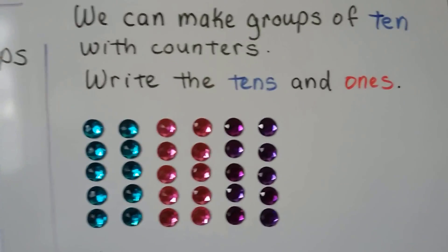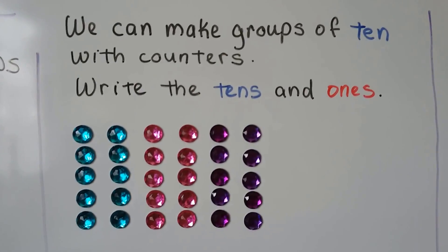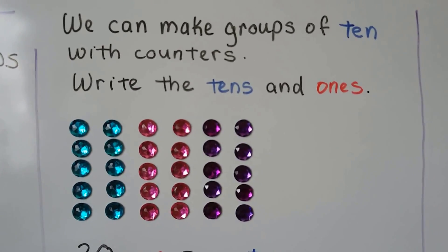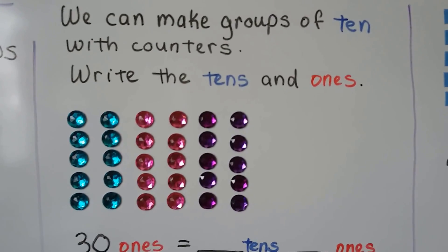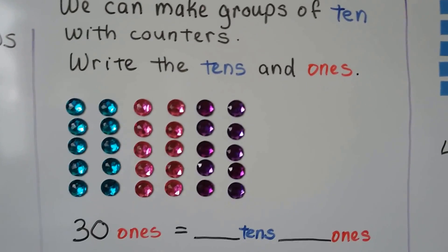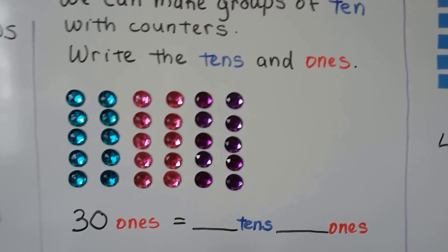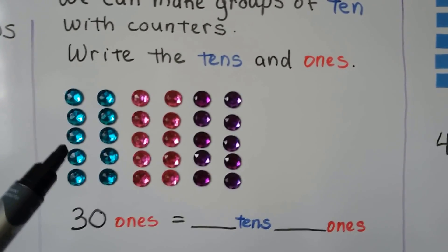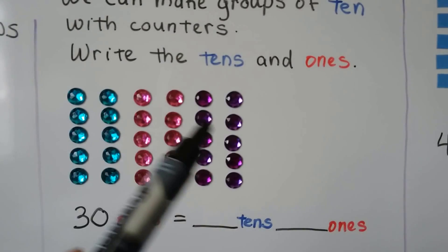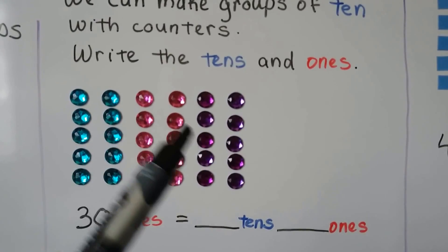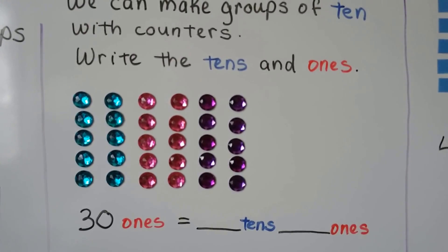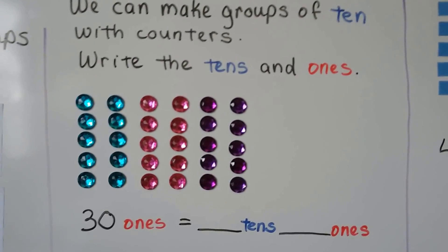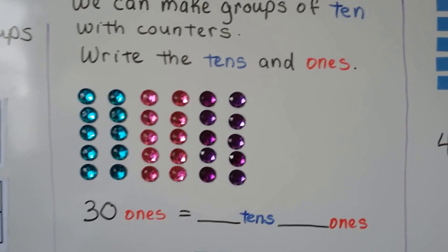We can make groups of ten with counters. Write the tens and ones. Here we have thirty ones — there are thirty gems here — and we can make groups of ten.